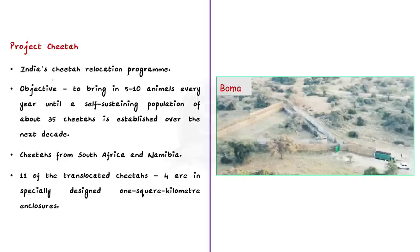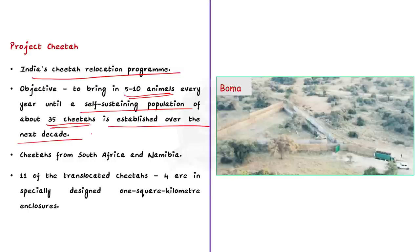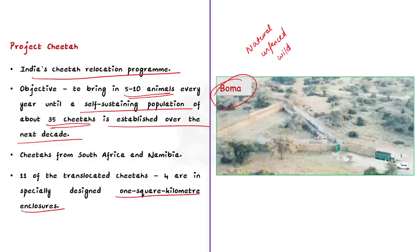Project Cheetah is India's cheetah relocation program. Its objective is to bring in 5 to 10 animals every year until a self-sustaining population of about 35 cheetahs is established over the next decade. Unlike cheetahs in South Africa and Namibia that live in fenced reserves, India's plan is to have them grow in natural, unfenced, wild conditions. Currently, 11 translocated cheetahs are in the wild and 4 are in specially designed 1 square kilometer enclosures called Bomas.